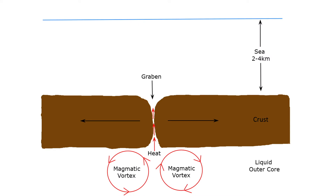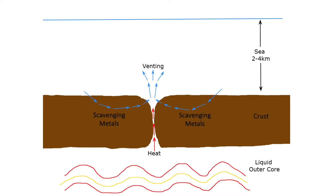Let's zoom in closer to the Earth's crust located below a sea where this extension faulting is taking place. The separation of Earth's crust causes a depression to form in the seabed called a graben. The extension faulting provides an escape route for the heat of Earth's interior, causing venting to establish along the fault. Imagine the force similar to a jet engine thrusting a plume of water into a sea basin about two to four kilometers below the surface.